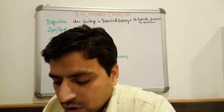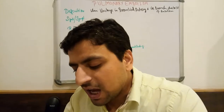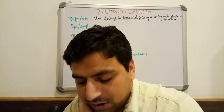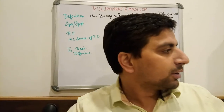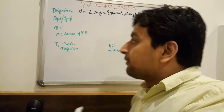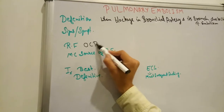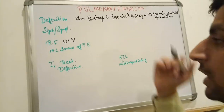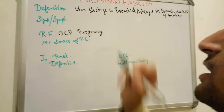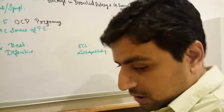Option A is a 30-year female on OCPs. Option B is pregnancy. Option C is leg paralysis. Option D is a 50-year person with uncomplicated cholecystectomy. Option E is Behçet's disease. The answer — excluding option D — is A, B, C, and E. A 30-year female on OCPs is a risk factor. Pregnancy is also a risk factor because the female takes bed rest and cannot move much.